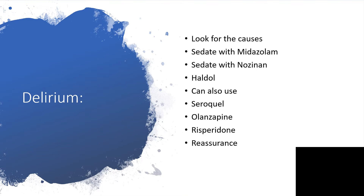Delirium — we must look for the causes. We can treat it with midazolam or Nozinan. Haloperidol is welcome here. We can also go for second-generation antipsychotics that are required. While managing all of this and giving all these medications, we have to reassure the family members and explain that we want to do everything to let this person die peacefully, not in any pain whatsoever.